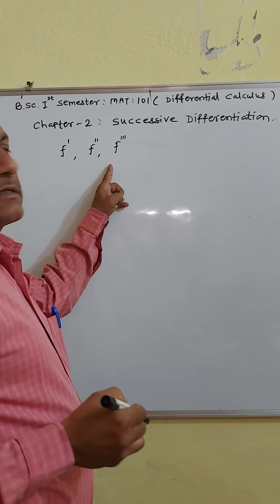Solution: it is given that x is equal to a into cos theta plus theta into sin theta. Here x is a function of theta, therefore differentiate with respect to theta. dx by d theta is equal to a into derivative of cos theta, which is minus sin theta, plus by product rule: sin theta as it is into derivative of theta, which is 1, plus theta as it is into derivative of sin theta, which is cos theta.